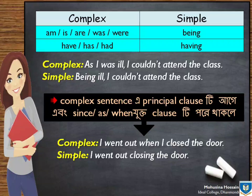Same rules এর ক্ষেত্রে, যদি verb টি Principal verb না হয়ে Be verb অথবা Have verb হয়, তখন Simple করার সময়: Am, Is, Are, Was, Were এর পরিবর্তে 'Being' হবে; এবং Have, Has, Had এর পরিবর্তে 'Having' হবে। For example: 'As I was ill, I couldn't attend the class' Simple হবে: 'Being ill, I couldn't attend the class.' আবার, অনেক সময় Complex Sentence এ Principal Clause এর আগে Since/As/When Clause পরে দেখি। এতে চিন্তার কোনো কারণ নেই। এটিও আগের Rules follow করে করতে হবে। Principal Clause ঠিক রেখে, Subordinate Clause রূপান্তর করতে হবে।